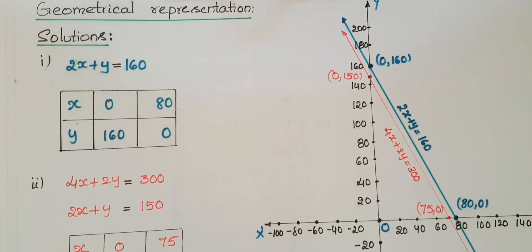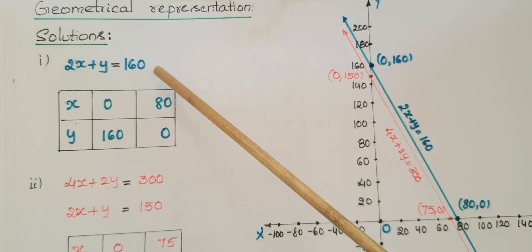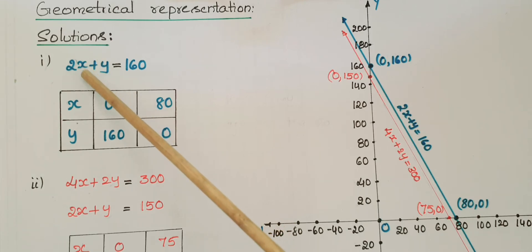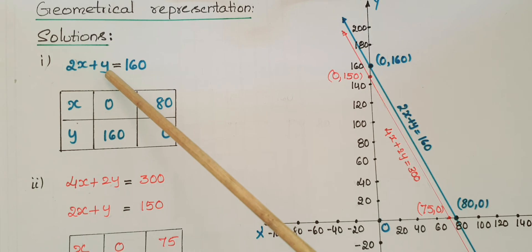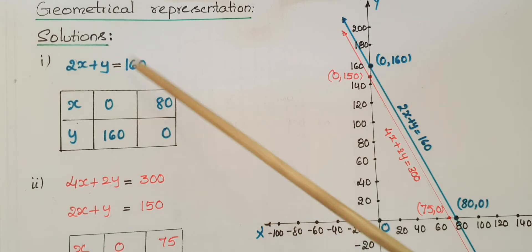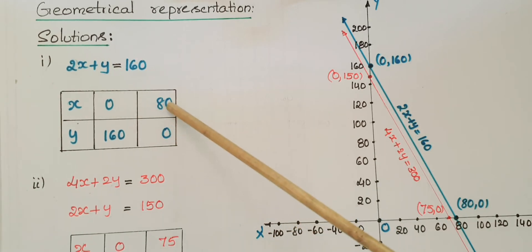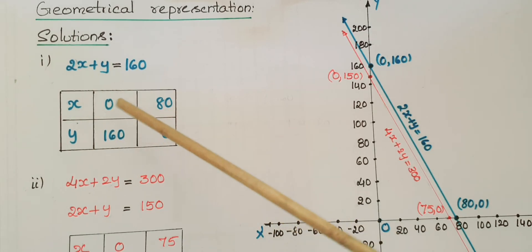Now we have to represent this situation geometrically. For that, we need to find at least two solutions for each equation. For the first equation, 2x + y = 160: if x = 0, then y = 160; and if y = 0, then x = 160 ÷ 2 = 80. So the two coordinates for this equation are (0, 160) and (80, 0).